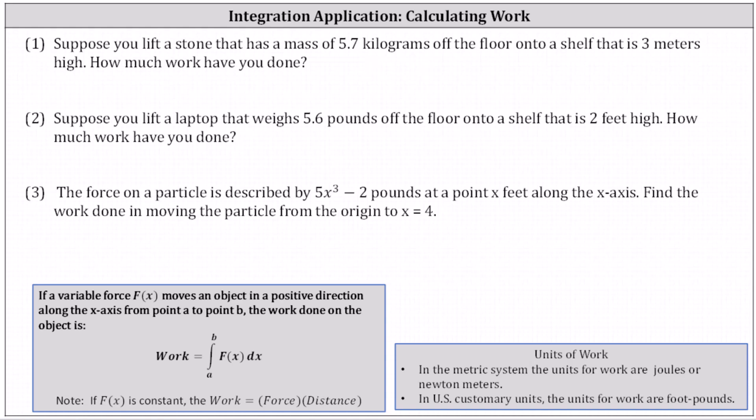We need to begin by determining the force. Recall the force F is equal to the mass m times A, the acceleration due to gravity. Which means in this case, the force is equal to the mass of 5.7 times the acceleration due to gravity, which is 9.8 meters per second squared, which gives a force of 55.86.